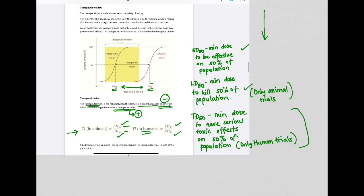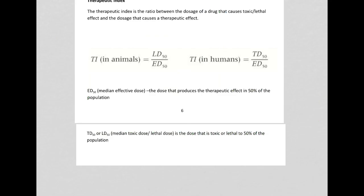These are important for you to remember. ED50 is a dose that produces therapeutic effect in 50% of the population. TD50 or LD50 is the dose that is toxic or lethal to 50% of the population.